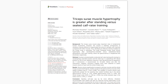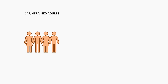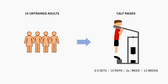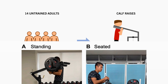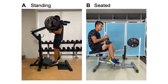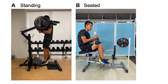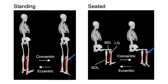For example, this study compared the effects of training a muscle with different exercises which train the same muscle at different lengths. 14 untrained adults performed 3-5 sets of 10 reps of calf raises 2 times per week for 12 weeks with progressively increasing loads based on each individual's performance. One leg performed the standing calf raise while the other leg performed the seated calf raise. The standing variation puts the gastrocnemius, which is the ball-shaped upper calf muscle, in a more stretched position on average compared with the seated variation.